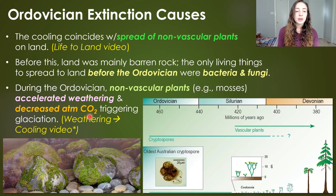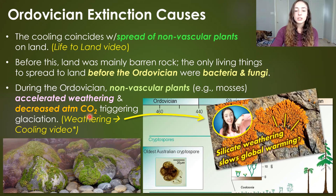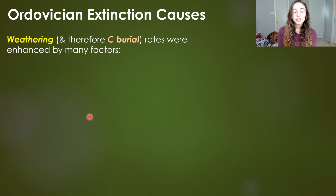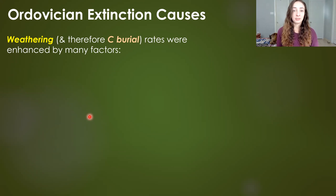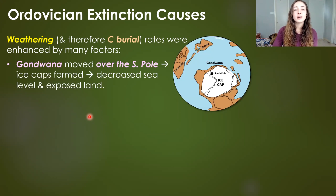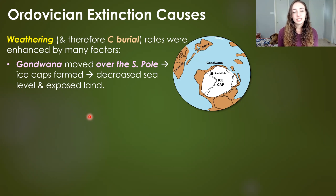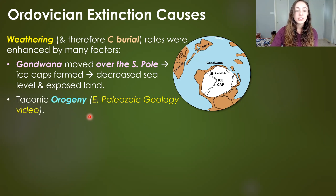If you want to know more about how mineral weathering contributes to cooling, you can check out my mineral weathering video. During the Ordovician, weathering and subsequent carbon sequestration and burial was being enhanced by many factors, not just plants spreading on land. For example, Gondwana, a large supercontinent, moved over the South Pole and caused ice caps to form, which decreased sea level and exposed land to more weathering.